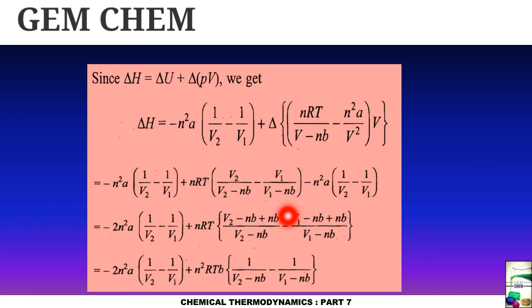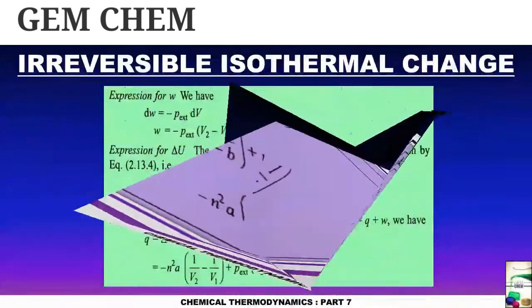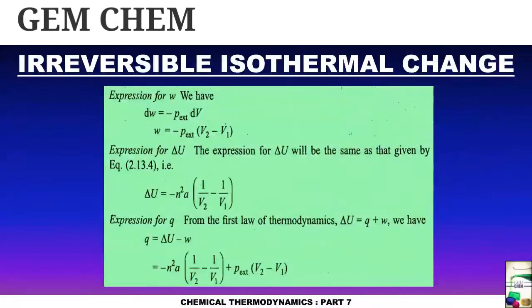Now let us go to the next part. We are going to deal with irreversible isothermal change. Now if you observe here, expression of w and delta U remains the same, whereas the q is equal to delta U minus w, so here it becomes same as the previous, only w is given by p exterior, V2 minus V1.